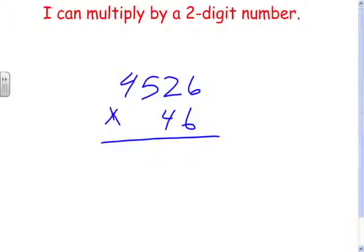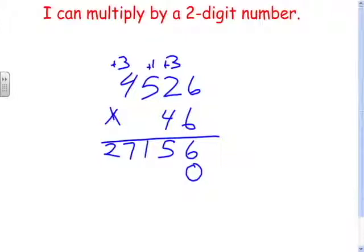Six times six is thirty-six. Two times six is twelve, plus three is fifteen. Five times six is thirty, plus one is thirty-one. Four times six is twenty-four, plus three is twenty-seven. I need to move everything over from the ones to the tens, so I put a zero in the ones place.